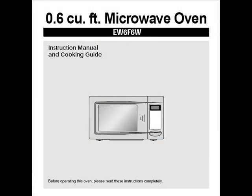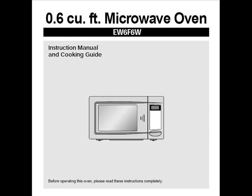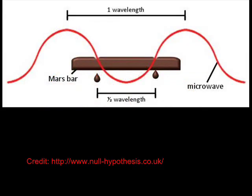I already know the frequency because it says so on my microwave oven: it's 2.45 gigahertz. All I need to do is find the wavelength. The wavelength is the distance between two peaks. In an ideal experiment I'd measure between two peaks, but my microwave oven is too small for that. Instead, I'll measure the distance between one peak and one low — which is half the wavelength — and multiply by two to get the full wavelength. Think about what real scientists with real labs can do!